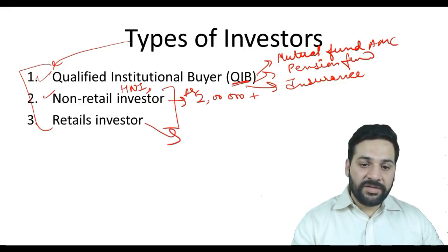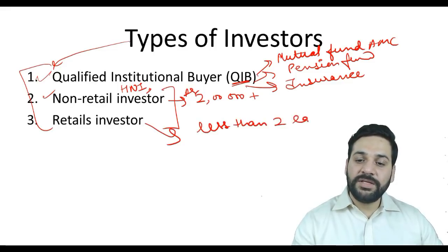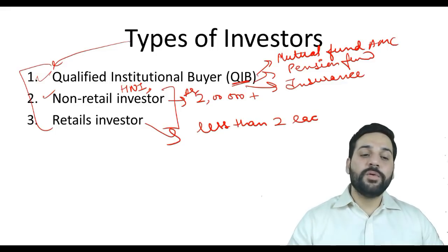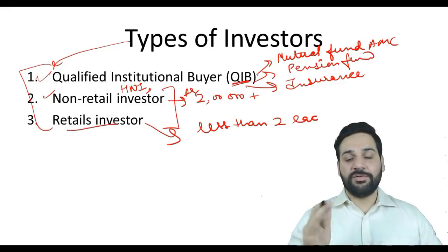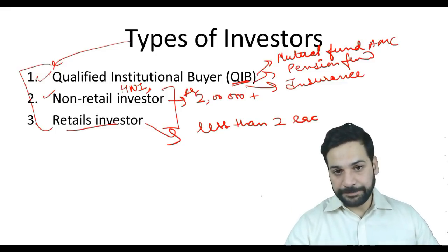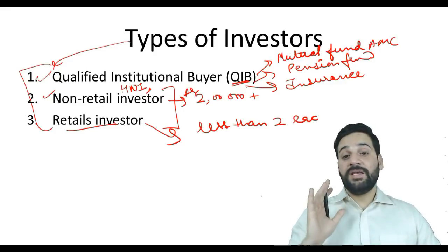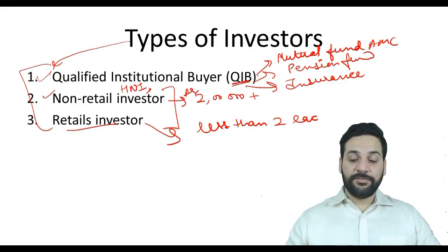Any investor who is investing less than two lakh rupees in an IPO is a retail investor or an individual investor. So why are we dividing investors into three categories? Because there is a proper quota for each of these investors in IPOs.